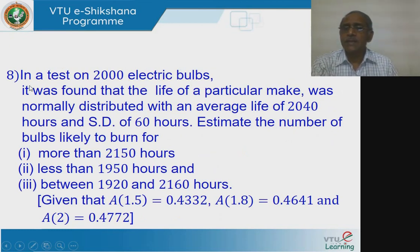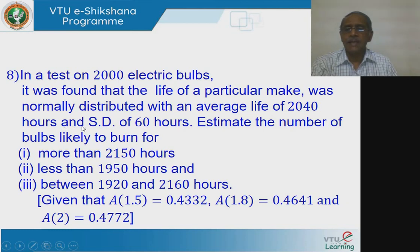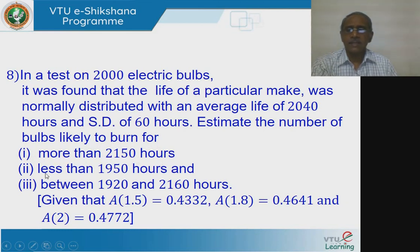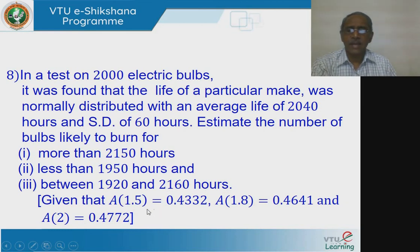Next application problem: In a test on 2000 electric bulbs, it was found that the life of a particular make was normally distributed with an average life of 2040 hours and standard deviation of 60 hours. Estimate the number of bulbs likely to burn for more than 2150 hours, less than 1950 hours, and between 1920 and 2160 hours. Given that the area between z = 0 and z = 1.5 is 0.5.